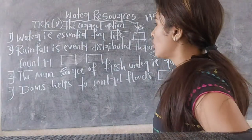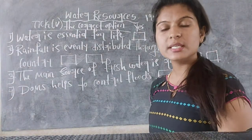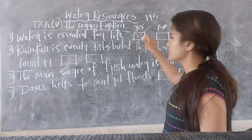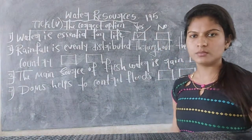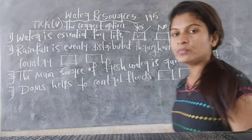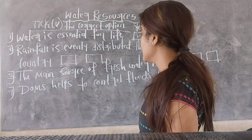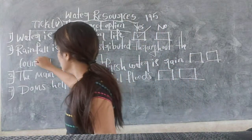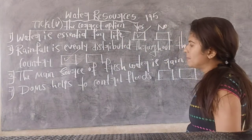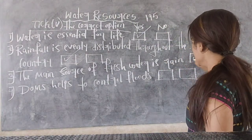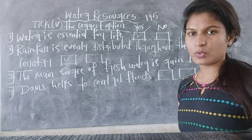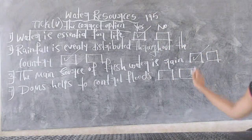Let's see the answers to these questions. First one: water is essential for life. Yes, water is essential for life, so put the right mark in the yes box. Second one: rainfall is evenly distributed throughout the country. Yes, put the mark in the yes box. Third one: the main source of fresh water is rain. Yes, rainwater is called fresh water, so put the right mark in the yes box.